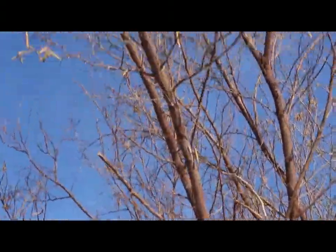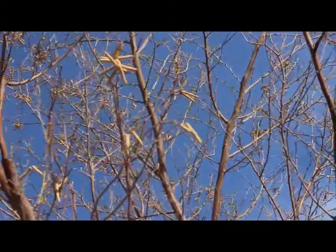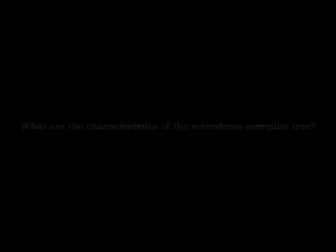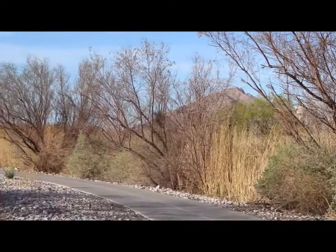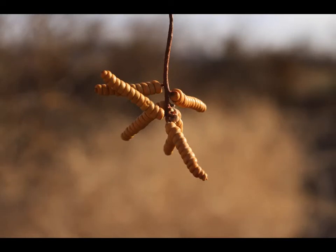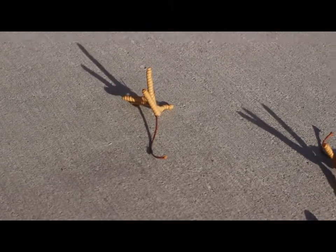Next is the prosopis pubescence, aka the screw bean mesquite tree. Like the honey mesquite, the screw bean can also grow up to 30 feet. Their flowers bloom to be yellow as well. What do you think the characteristics are for the screw bean mesquite trees? And is the screw bean tree pictured in A, B, C, or D? Take a couple of minutes to discuss with those around you. The screw bean mesquite tree was pictured in option D. Like the honey mesquite tree, the distinguishing characteristics of the screw bean are their pods. The pods are very unique and have spiral edges like a screw. They are usually brown and can be found on the floor or in bundles in the trees.